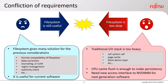Finally, you need data area management. Software needs to assign not only free areas but also used areas for reusing its data. In addition, the kernel must assign the area to the appropriate process with an authority check. So there is a conflict of requirements. File system is still useful because it gives many solutions for the previous considerations, like format compatibility, data correction, journaling or copy-on-write, region management, authority check, and so on. However, file system is too slow — the traditional IO stack is too heavy, and a CPU cache flush is enough to ensure persistency. So we need a new access interface to NVDIMM for next-generation software.